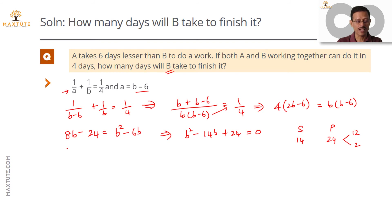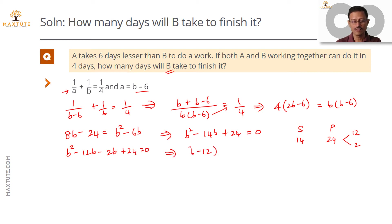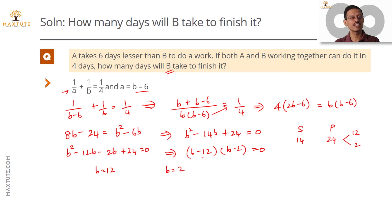The equation factorizes as B squared minus twelve B minus two B plus twenty-four equals zero, which factors into (B minus twelve)(B minus two) equals zero. So the values of B are either twelve or two. B can finish the work in twelve days or B can finish the work in two days.